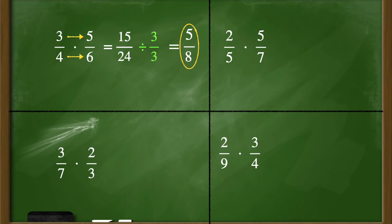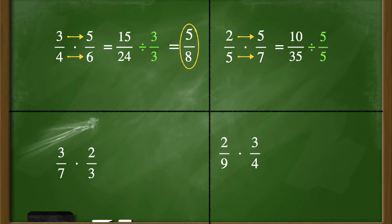Let's look at two-fifths times five-sevenths. We're going to follow those exact same three easy steps. Multiply the numerators: two times five gives me ten. Multiply the denominators: five times seven is thirty-five. Then I'm going to see if ten and thirty-five share any common factors. Yes, they share a common factor of five. So ten divided by five is two, and thirty-five divided by five is seven. My simplified answer to two-fifths times five-sevenths is two-sevenths.